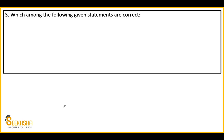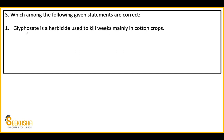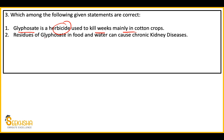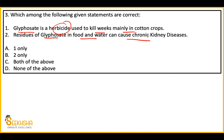Which among the following statements are correct? First: Glyphosate is a herbicide that is used to kill weeds among cotton crops. Second: Residues of glyphosate in food and water can cause chronic kidney diseases. Which statement is correct? Option A: One only. Option B: Two only. Option C: Both of the above. Option D: None of the above.